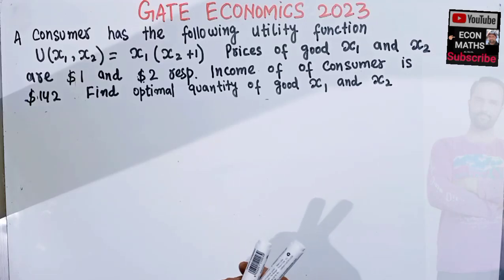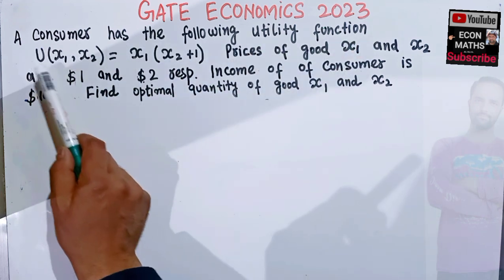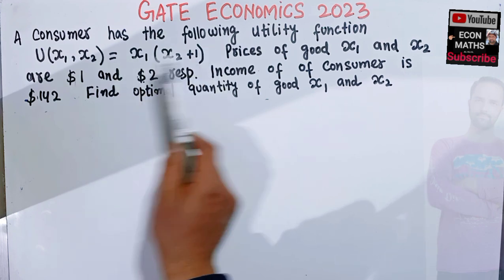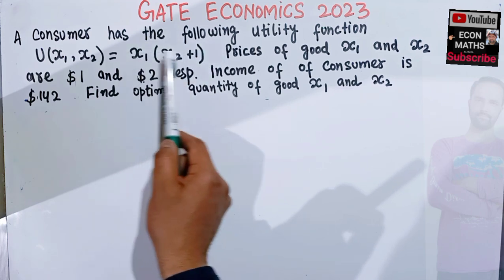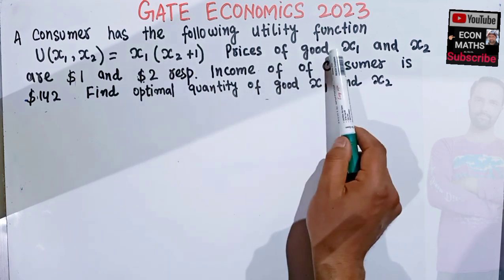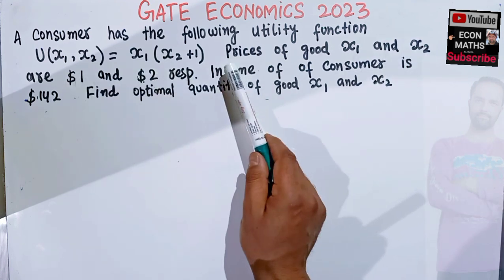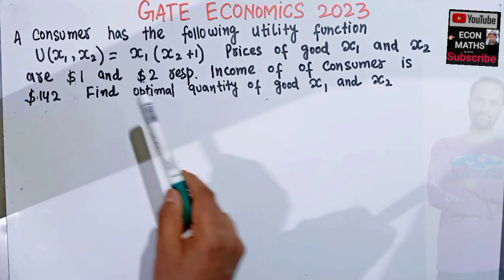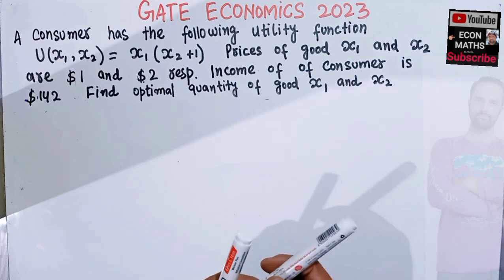A question from the GATE Economics 2023 paper: a consumer has the utility function U(x1, x2) = x1(x2 + 1), where x1 and x2 are two goods. The price of good x1 is $1 and the price of good x2 is $2. The consumer's income is $142. We need to find the optimal quantities of x1 and x2 at utility maximization.